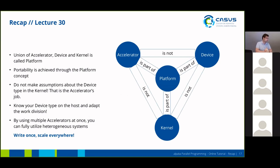We've seen the platform concept, which is a union of accelerator, device, and kernel. Through the platform concept — which is more of a meta-concept, so there's no actual type in Alpaca — portability is achieved. As a user, you shouldn't make any assumptions about your device type in the kernel, because this is the job of the accelerator. At compile time, the accelerator will resolve to something platform-specific, such as CUDA, HIP, or OpenMP, and will adjust your kernel accordingly. However, on the host side, you should know your device type and adapt the work division. If you use multiple accelerators at once, you can fully utilize heterogeneous systems.